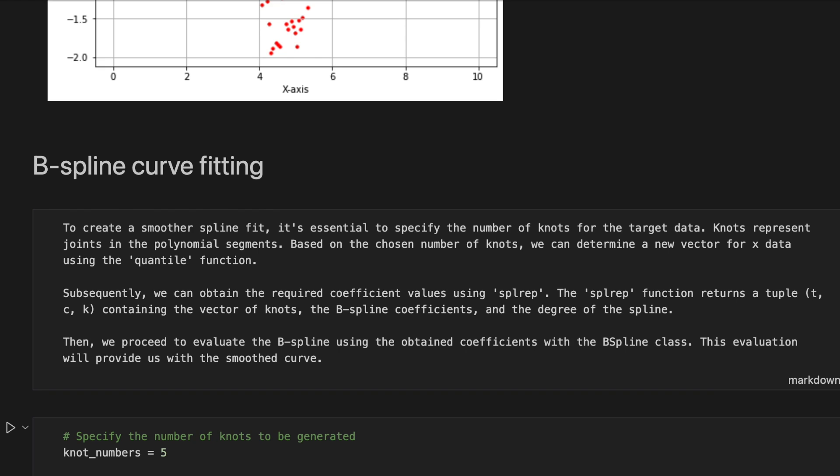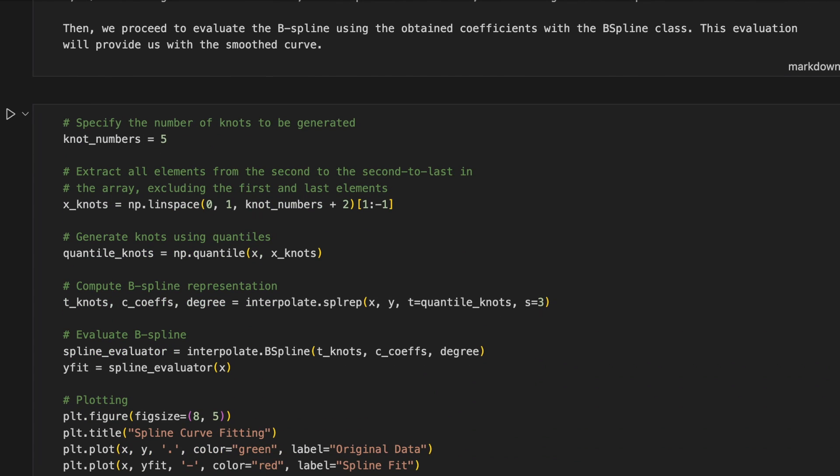Subsequently, we can obtain the required coefficients using SPLREP function. The SPLREP function returns a tuple containing the vector of nodes, b-spline coefficients, and the degree of the spline. Then we proceed to evaluate the b-spline using the obtained coefficients with a b-spline class. This evaluation will provide us with a smoothed curve.